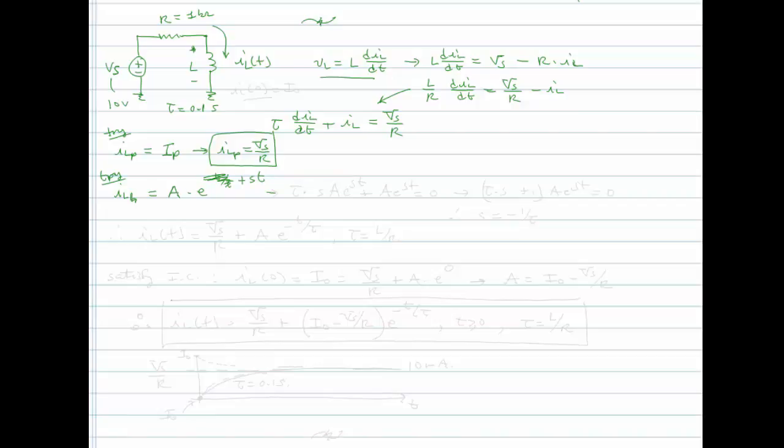If you plug that in, let's just go ahead and do it. We'll have tau times the derivative of ILH of T is going to be S times A E to the ST plus A E to the ST is equal to zero. Remember, we're solving the homogeneous equation. This results in tau times S plus 1 times A E to the ST is equal to zero. So therefore, we will choose S to be equal to minus 1 over tau. So therefore, we can write the complete solution IL of T as being equal to VS over R plus A E to the minus T over tau, where tau is equal to L over R.